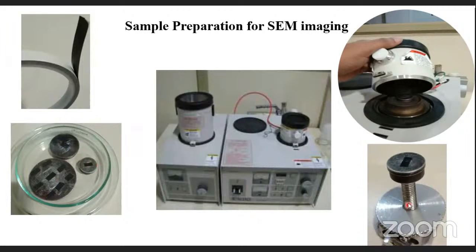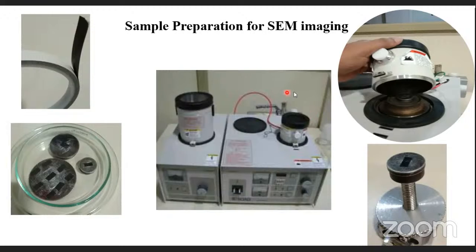We directly place conductive samples into the stub holder and go for analysis. For non-conductive samples, we use the gold sputtering unit — from Hitachi in our case. A very small amount of gold, only one to two nanometers thick, is coated over your sample. It won't disturb or affect your sample morphology. We place the sample inside the chamber, apply vacuum, do the sputtering, then put it on the stub holder for direct analysis.